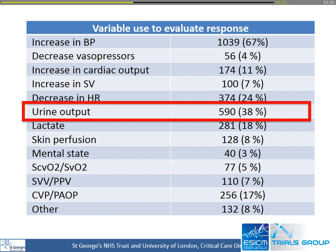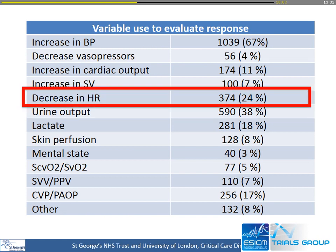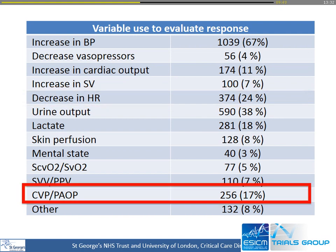Urine output that increases because we are giving fluids could just be a marker that we are overloading our patient. It has nothing to do with cardiovascular function. We know that by increasing venous congestion, we can actually make renal function worse. Decreasing heart rate — I would agree with this: if I give a fluid bolus and the heart rate drops, something has usually happened to cardiac output and stroke volume. And changes in CVP were also used to evaluate the response to fluids — which, if used as a stopping rule, does have some physiological meaning.